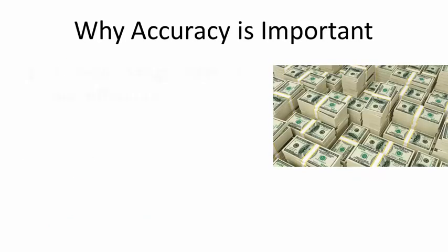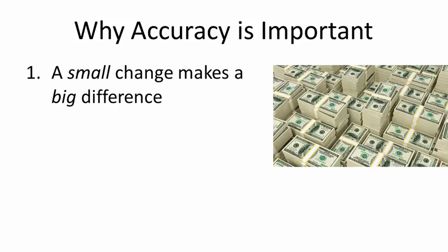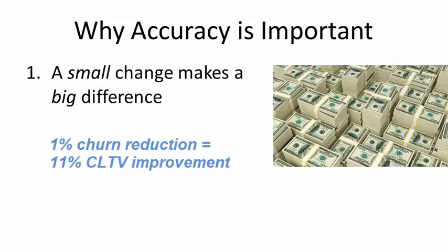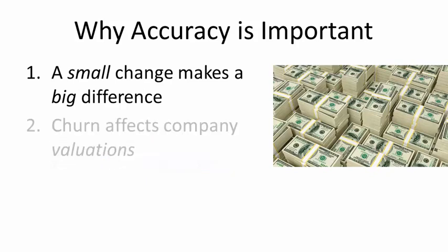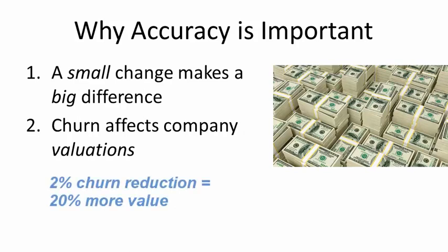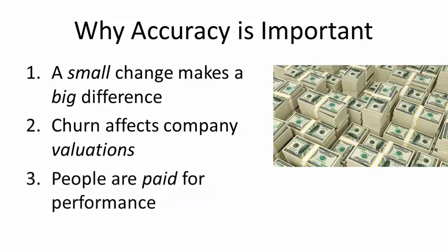So why is accuracy important? Three reasons. First, a small change in logo churn makes a big difference in customer lifetime value. Reducing churn just 1% from 10% to 9% annually increases customer lifetime value by 11%. Second, investors pay close attention to churn. Experts say a 2% improvement in churn increases company valuations by about 20%. And third, many companies compensate employees on churn performance. That means managers must get it right.